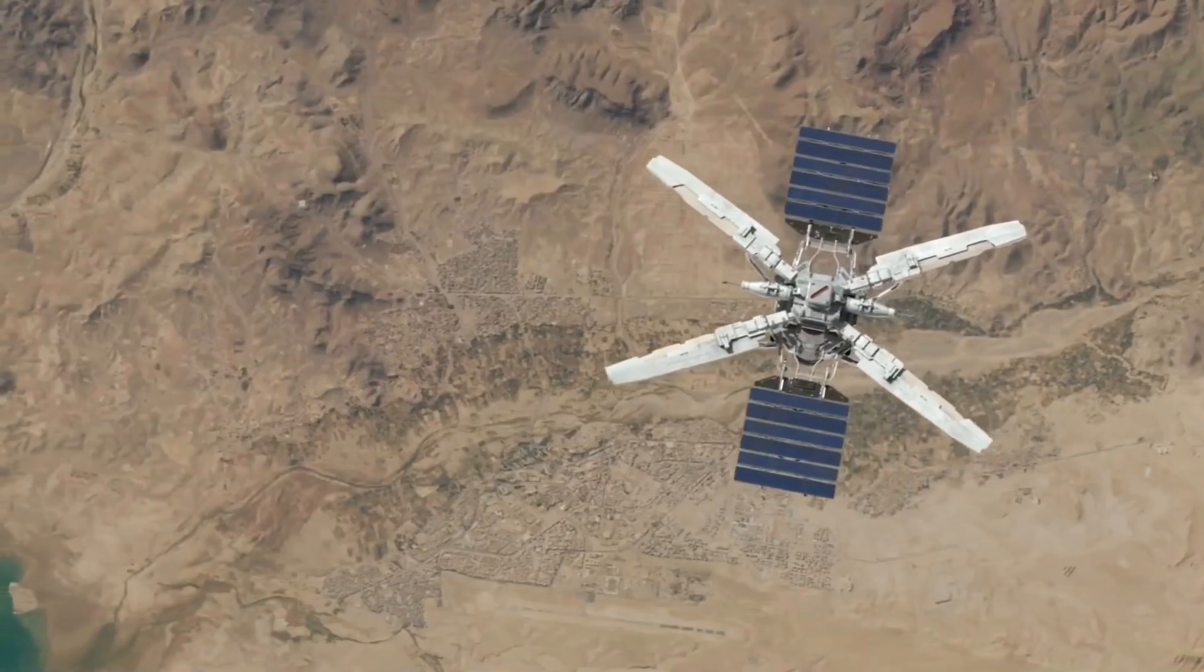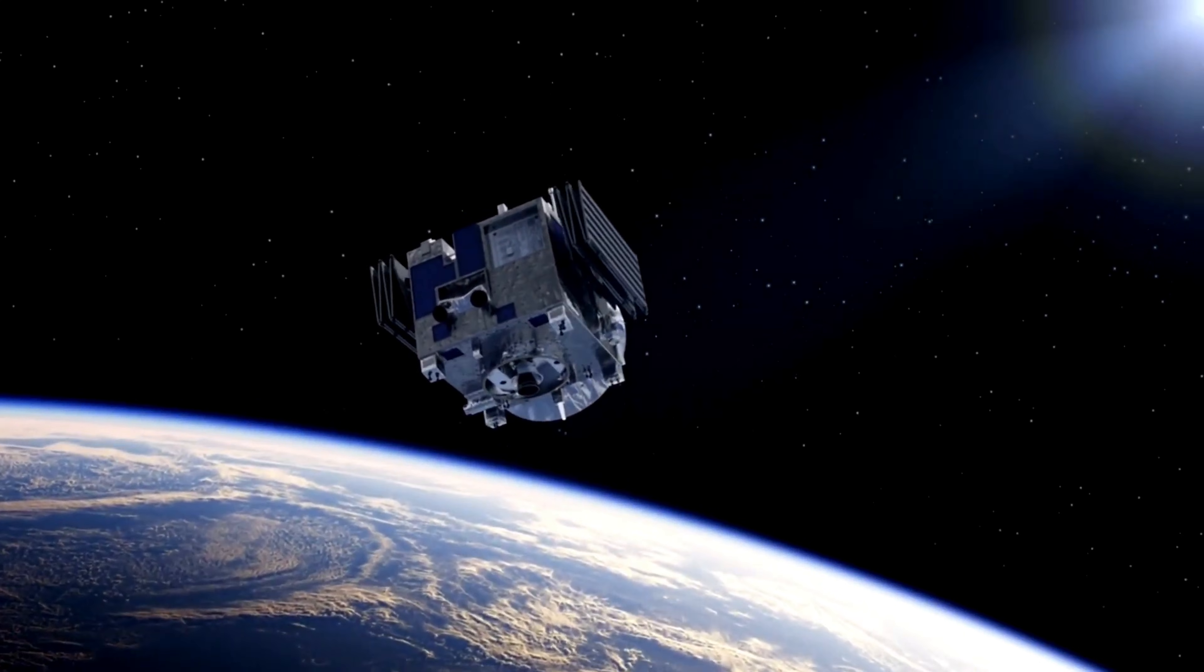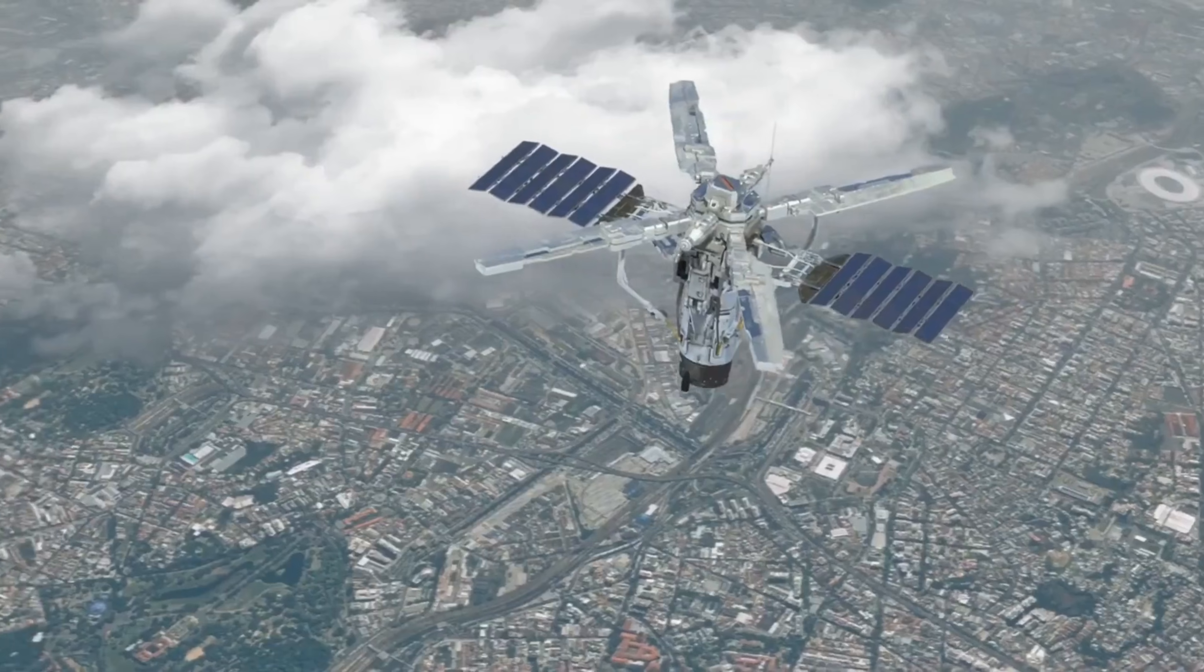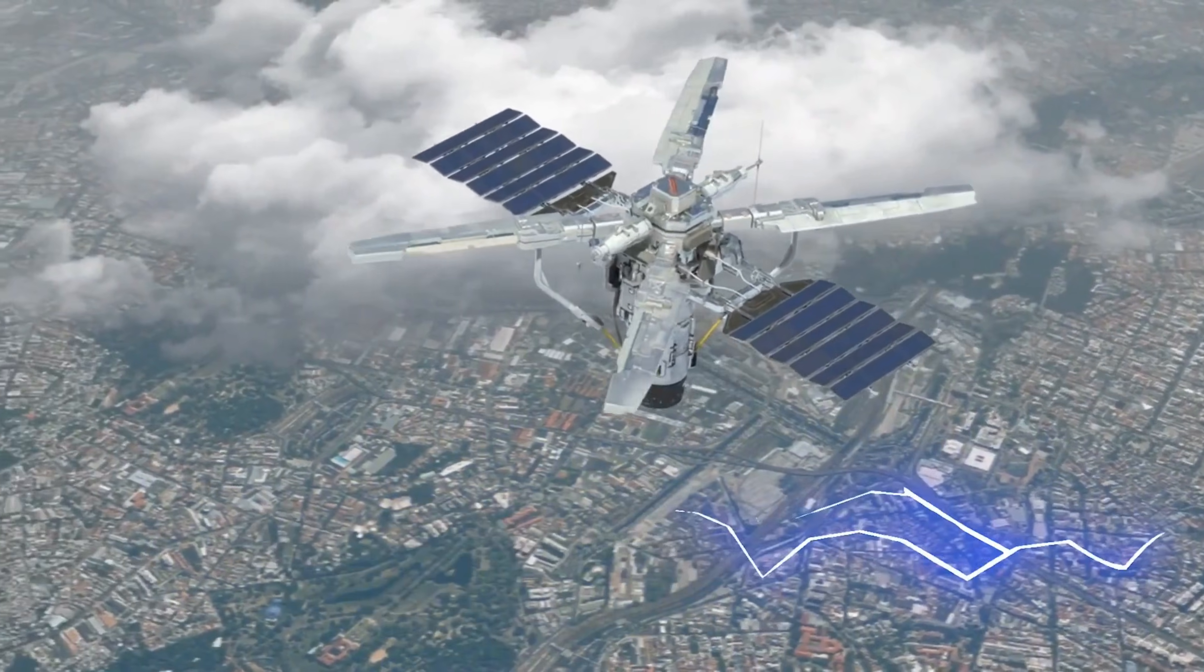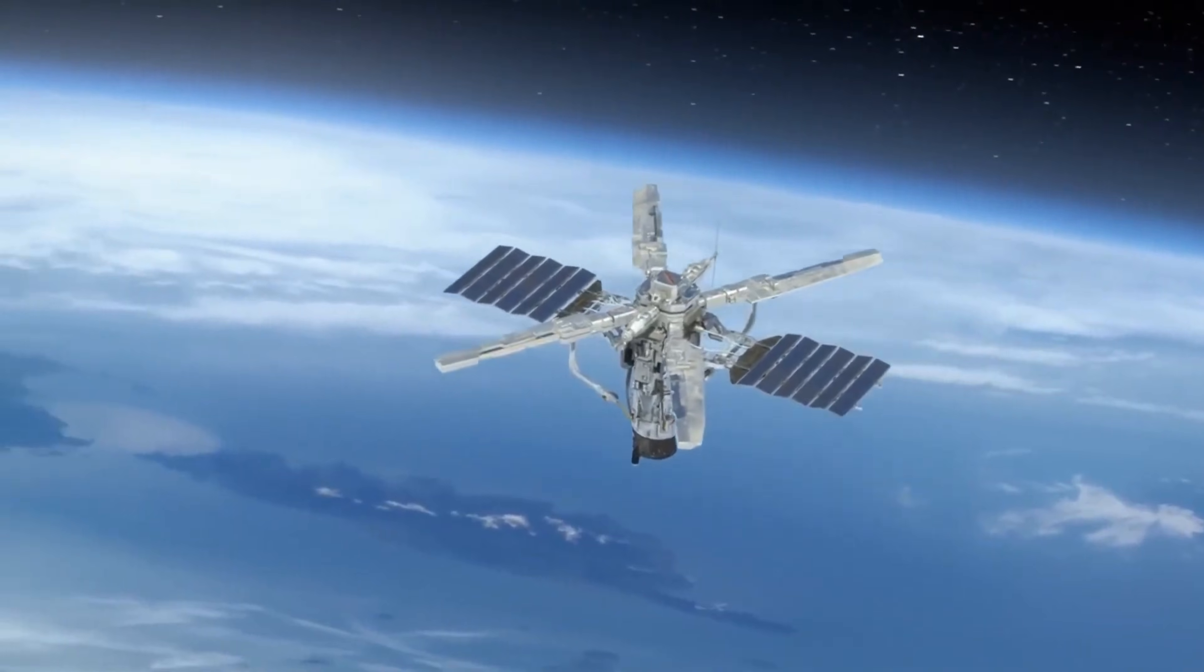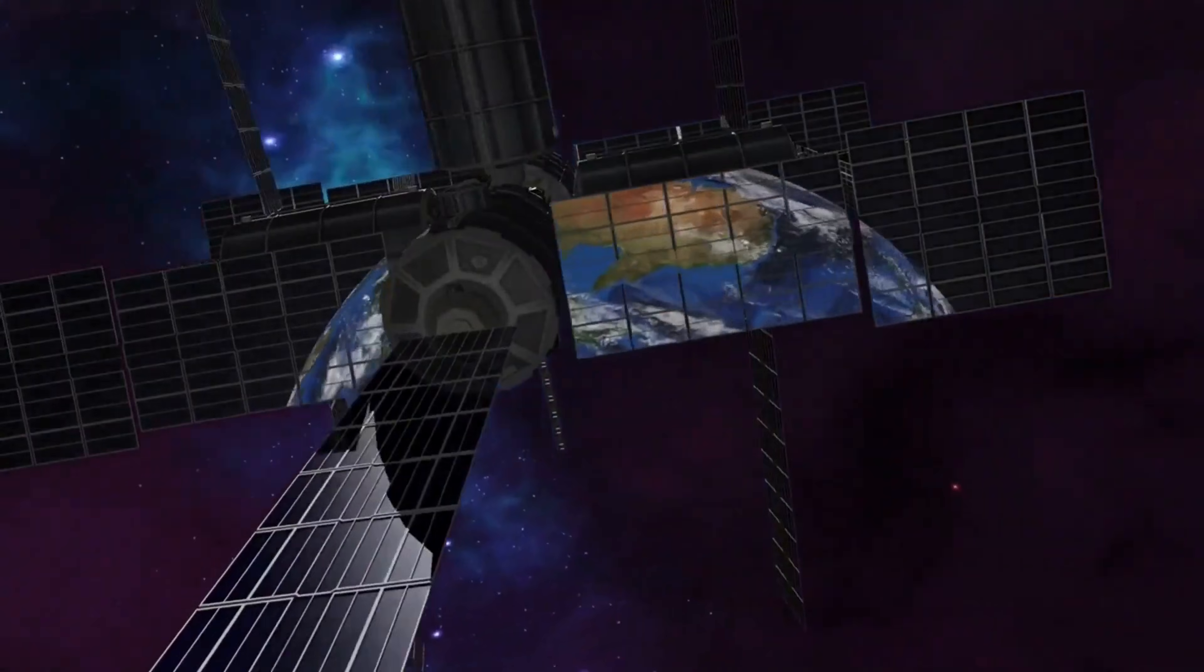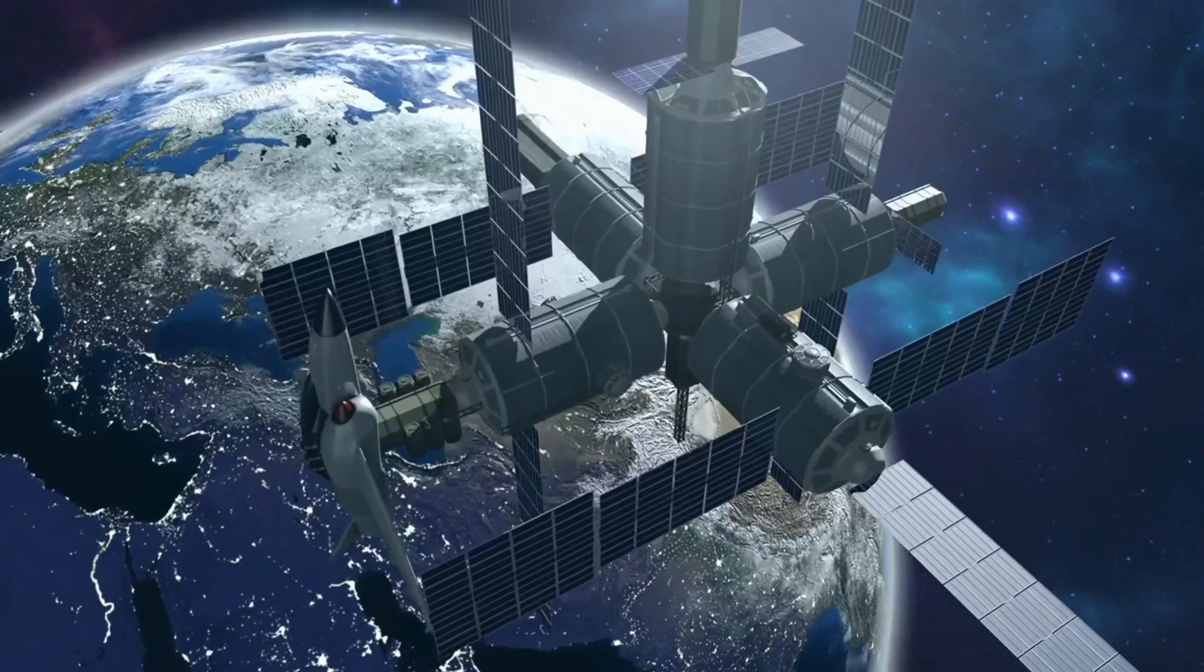Space-based solar power. Arrays collecting sunlight 24 hours a day. The first test satellite is already operational. Power that never stops flowing. When one nation controls orbital infrastructure, they control communications, navigation, surveillance, and potentially unlimited energy. But space superiority means nothing without the power to use it.